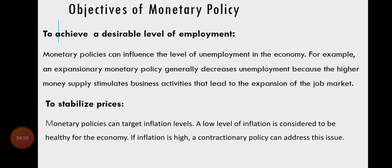دوسرا mechanism: money supply اور interest rate میں negative relationship پایا جاتا ہے۔ اگر money supply زیادہ ہو جائے تو interest rate کم ہو جائے گا، investors کو سستا قرضہ دستیاب ہوگا، وہ زیادہ investment کریں گے۔ تیسرا mechanism: money کی economy میں circulation بڑھے گی، overall economic activities میں تیزی ہوگی، consumption level بڑھے گا، اس طرح investment level بڑھے گا، factors of production کی demand بڑھے گی اور employment level increase کر جائے گا۔